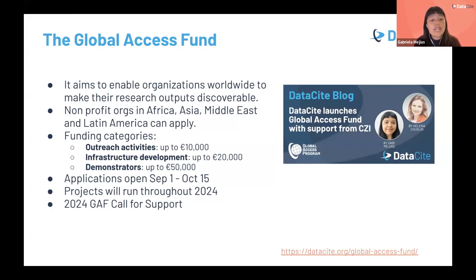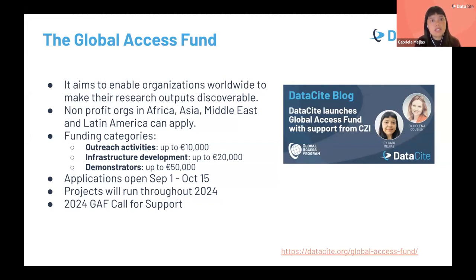We plan to announce the awardees in December this year, and the awardees' projects will run throughout next year. We're also working to launch a call for support for the Global Access Fund — we want to have this funding available again next year, so we're going to launch a campaign to call for financial support to make this funding available again to these underrepresented communities in 2024.